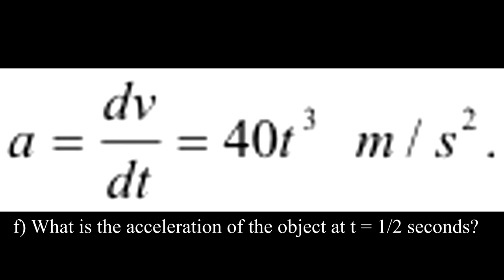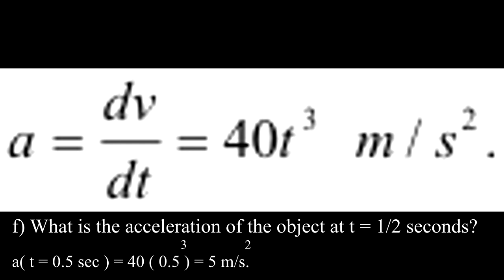Question F. What is the acceleration of the object at t equal to 1 half seconds? Here we get 5 meters per second squared. The positive sign means that the velocity of the object is increasing at this moment in time.